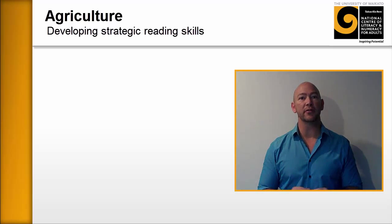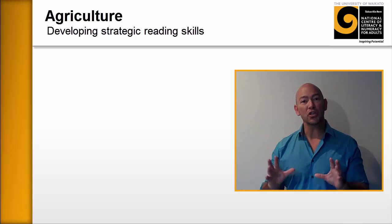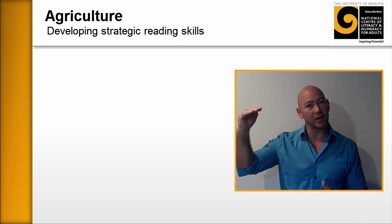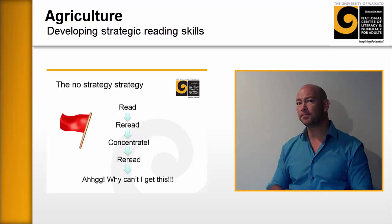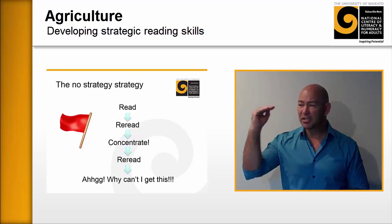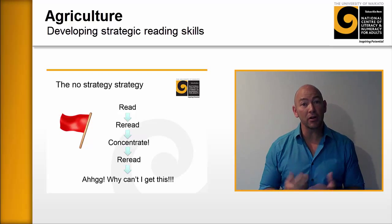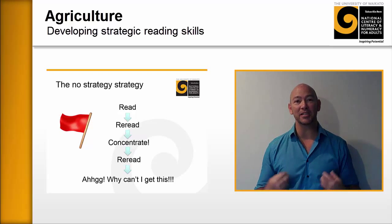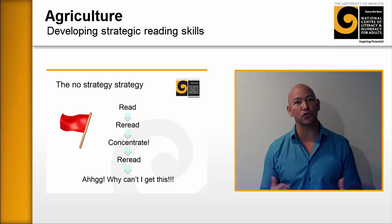It's got to do with the difference between good comprehenders and not so good comprehenders. Learners who are poor comprehenders tend to have this belief that you should read from the top of a text and just read your way down. What tends to happen is they start reading, they're not too sure about what they're reading or not understanding, but they just continue through. Their only strategy is to read and reread, and they get to the end of the text still not sure about what they've read.